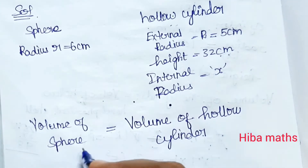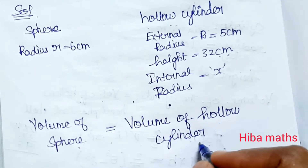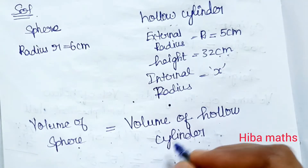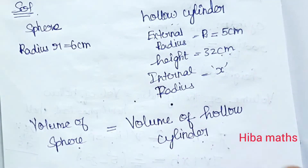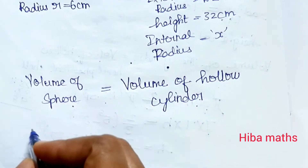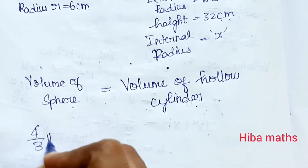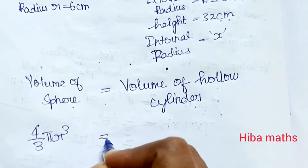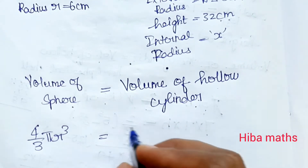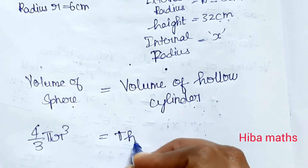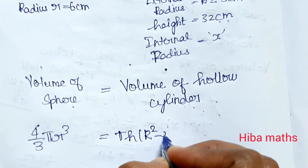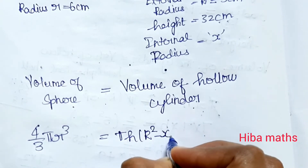We are going to melt the solid sphere into the hollow cylinder. The volume of the sphere is equal to the volume of the hollow cylinder. Volume of sphere formula is 4/3 × π × r³, and that equals the volume of hollow cylinder which is π × h × (R² − r²).